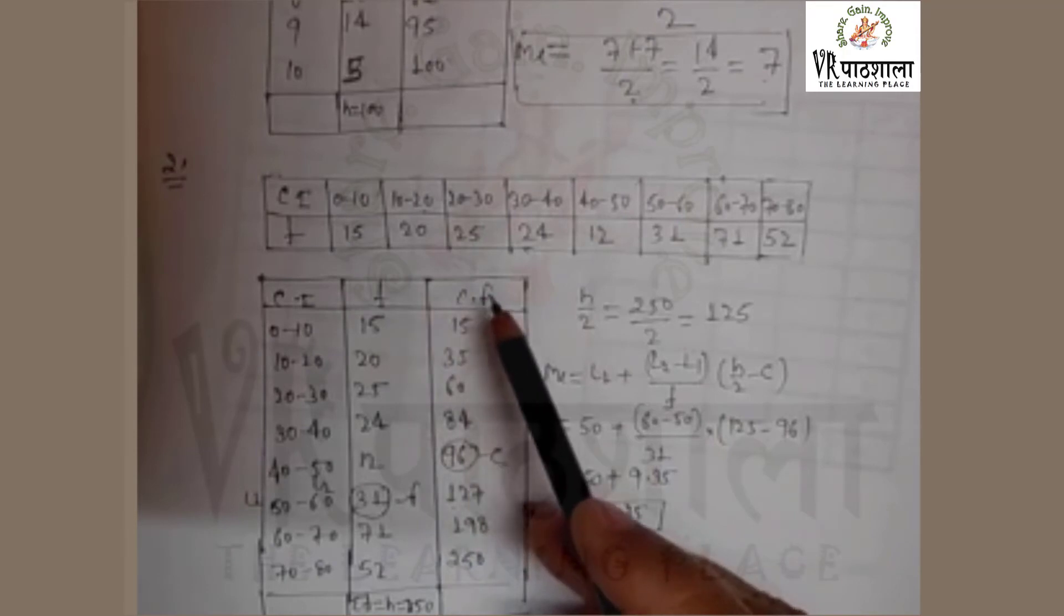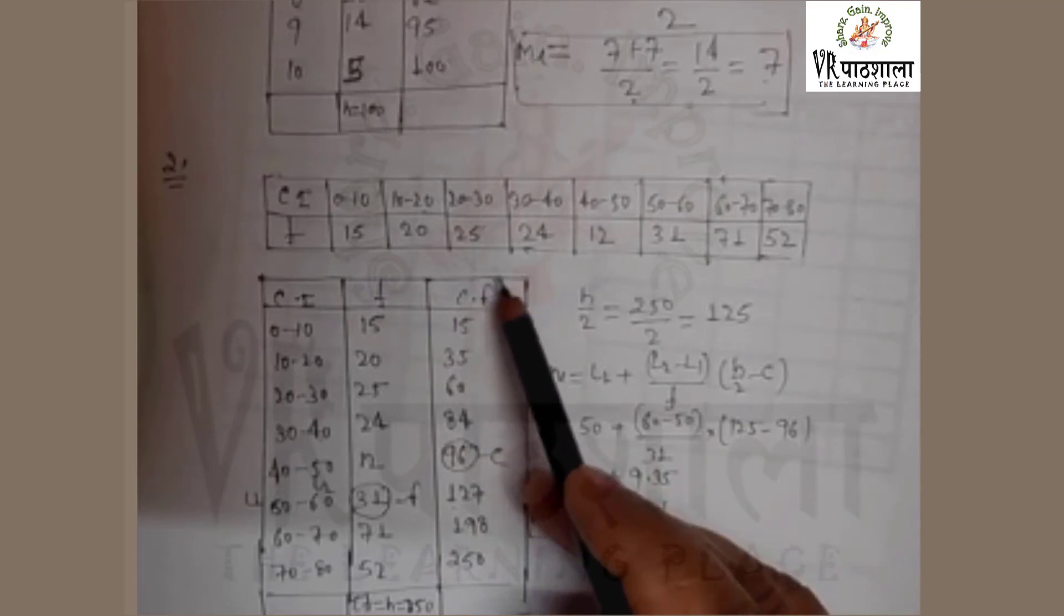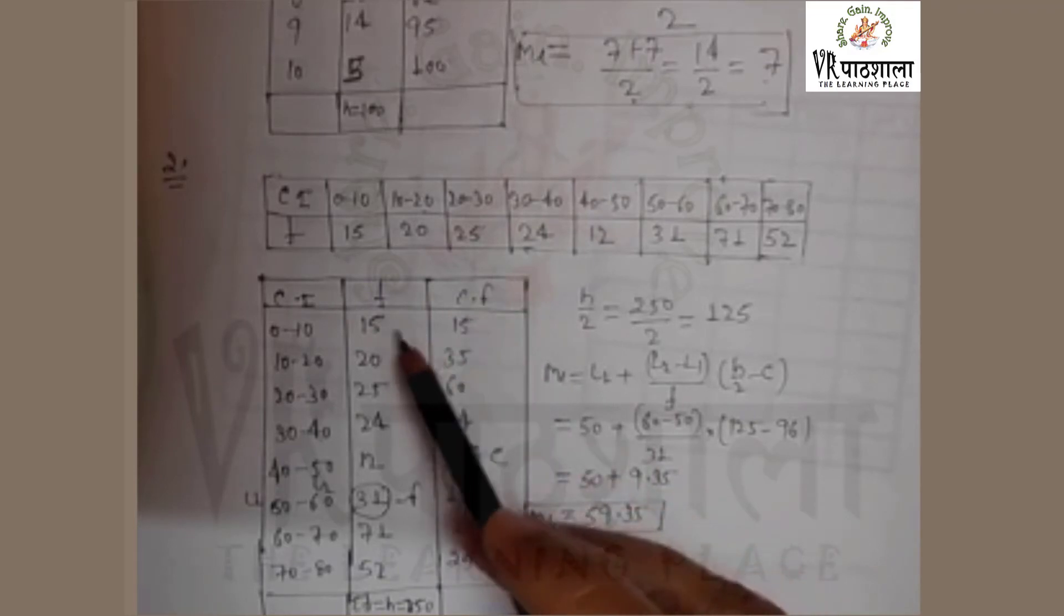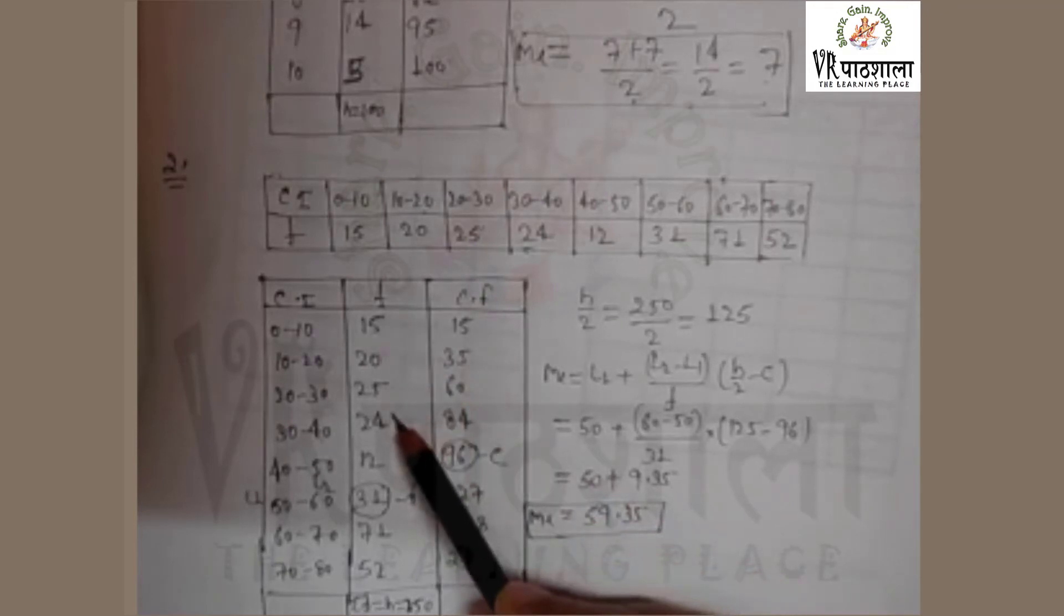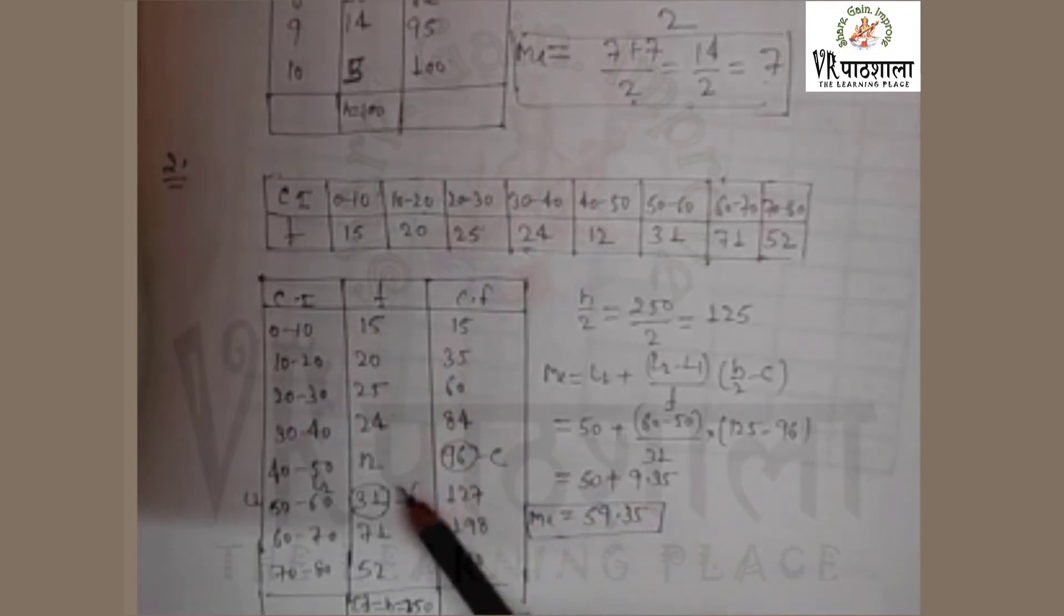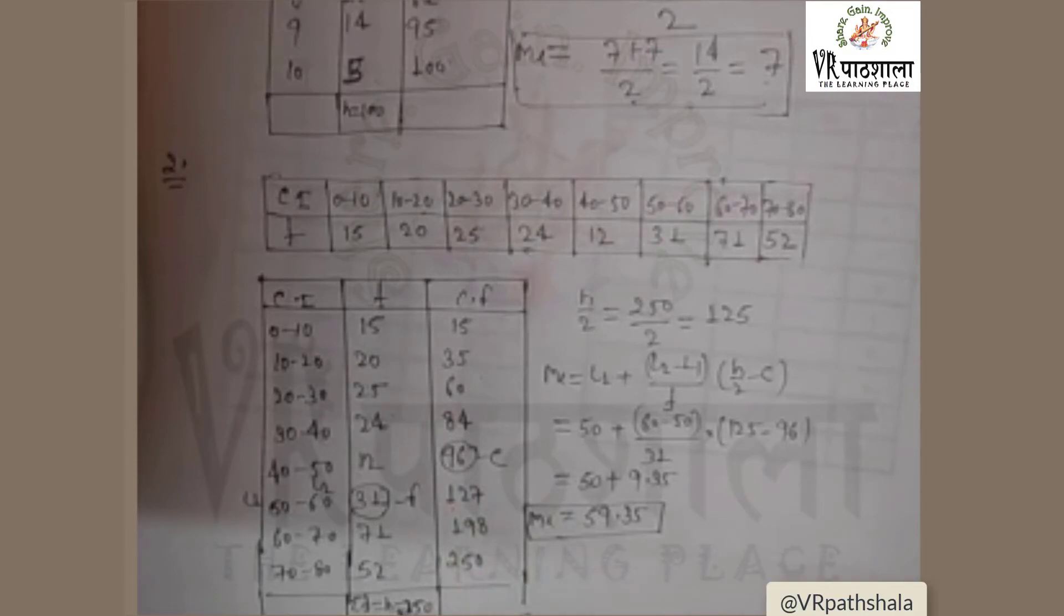We need for median cumulative frequency. Cumulative frequency is calculated in similar manner. The first term is 15, 15 plus 20 is 35, 35 plus 25 is 60, and similarly we calculate the cf. The summation f, n equals 250. The last term of cf is n.